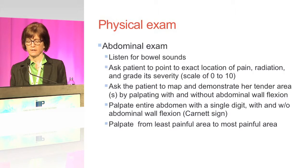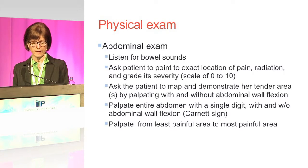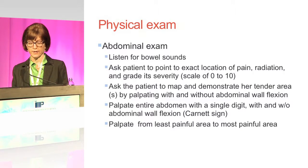Ask the patient to grade pain severity from 0 to 10, and ask them to map and demonstrate their tender areas by palpating with or without the abdominal wall flexed. There's a sign called the Carnett sign, which is when you have the woman flex forward, tightening her abdominal muscles. If it still hurts when she does that, it's an abdominal wall issue, not one that occurs inside the gastrointestinal tract. It's a very easy sign to determine whether this is a musculoskeletal issue or an intra-abdominal issue.